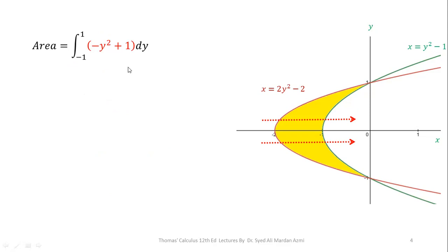Now integration of -y² is -y³/3 and integration of 1 is y with respect to y. In the next step, we will apply fundamental theorem of calculus by applying upper limit minus lower limit. And after this simplification, we get 4/3 as our answer.